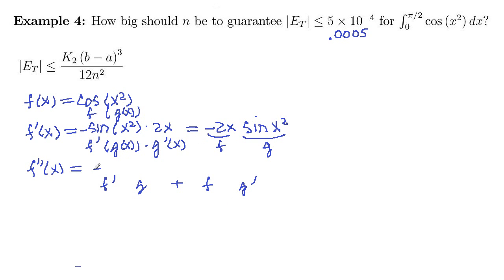So f prime, negative 2, times our g sine of x squared. Plus our f, negative 2x, times g prime of x. This is another chain rule like we did up here. So derivative of the outside function, cosine, at the inside function, x squared, right here, times derivative of the inside, 2x. So if we simplify here, negative 2 sine of x squared, plus negative will be minus 2x times 2x, 4x squared, and then cosine x squared.